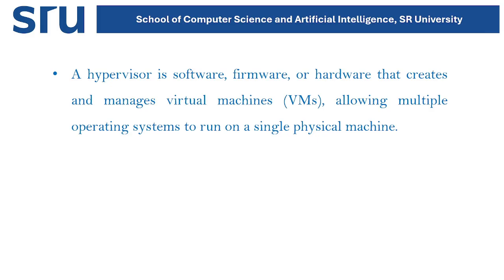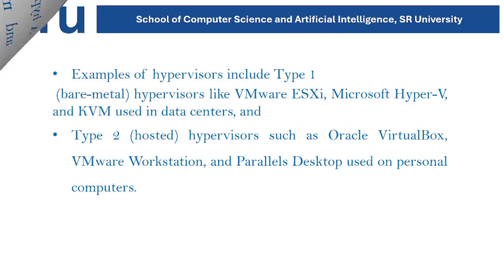There are two types of hypervisors. First, let us understand what a hypervisor is. A hypervisor is software, firmware, or hardware that creates and manages virtual machines, allowing multiple operating systems to run on a single physical machine. Type one — bare metal hypervisors — like VMware ESXi, Microsoft Hyper-V, and KVM are mainly used in data centers. Type two — hosted hypervisors — such as VirtualBox, VMware Workstation, and Parallels Desktop are used on personal computers.